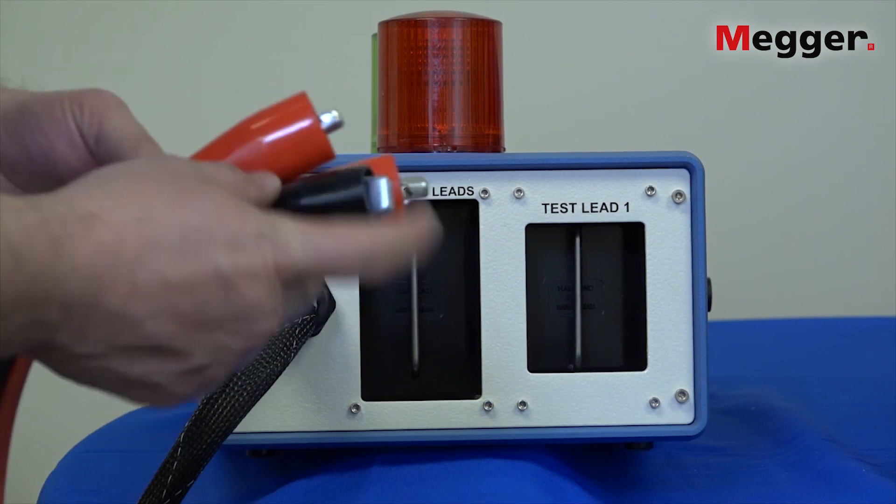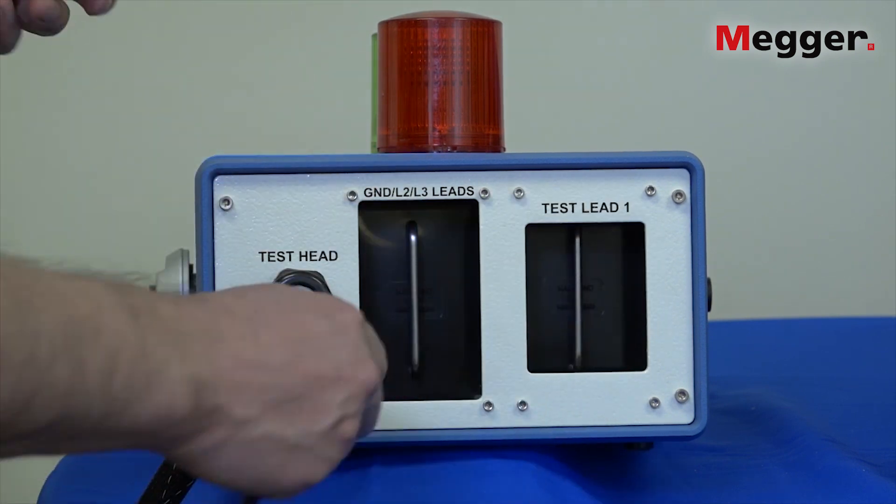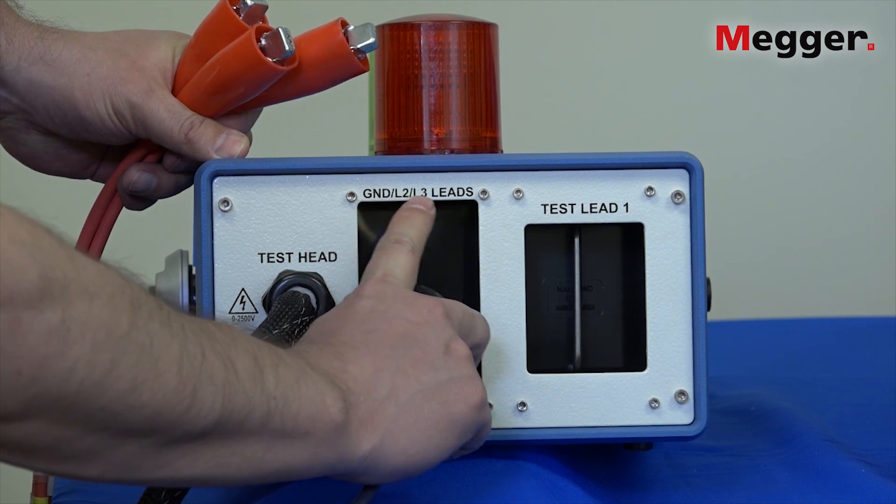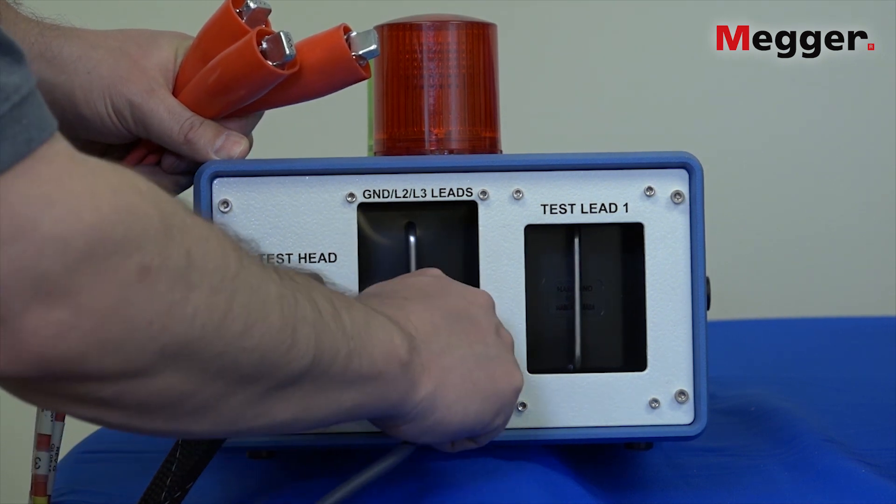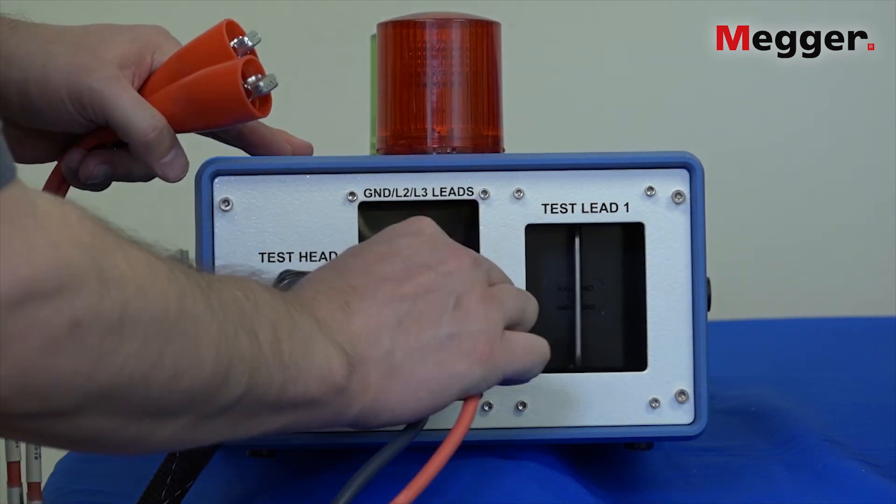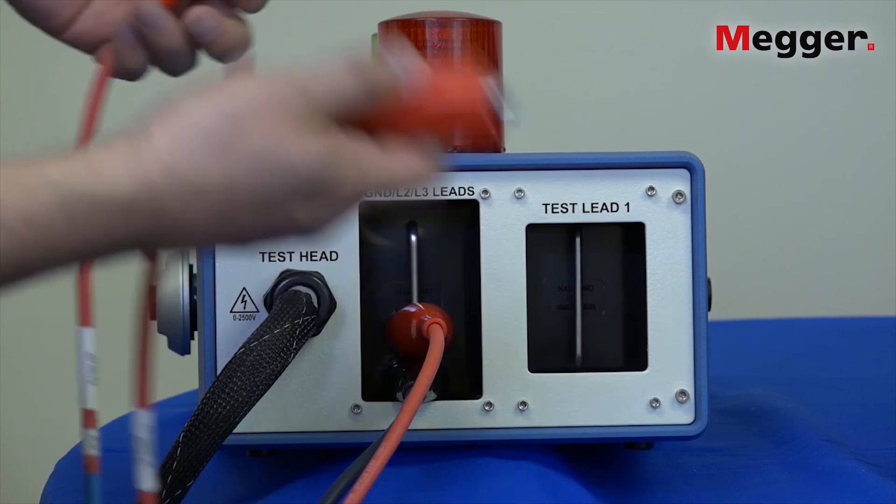The first thing we do is connect the black ground lead to the left bar here labeled ground lead, lead two, lead three. We're going to clip that onto that post and then we're also going to grab lead three and connect it and lead two as well.